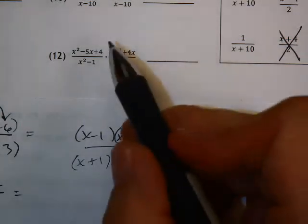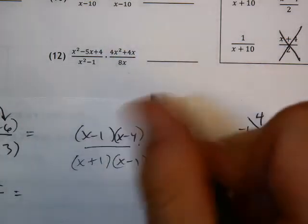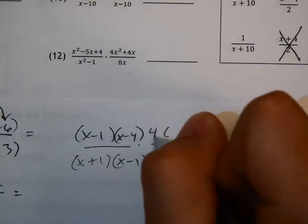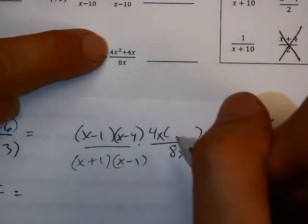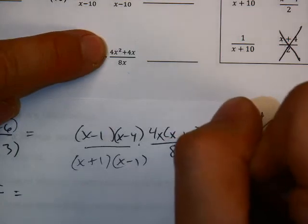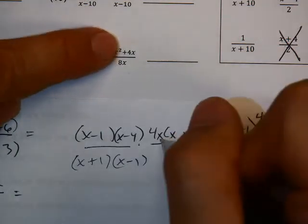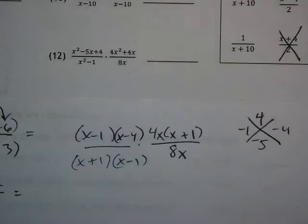On this side, the 4x squared plus 4x, I have a common factor there. The 4x is common to both terms. So when I factor that out, 4x dividing into that gives me x plus 1. 4x divided by 4x is 1. Now I'm going to try to cancel as much as I can and simplify.